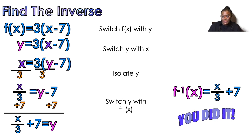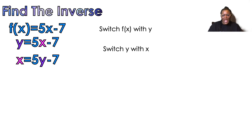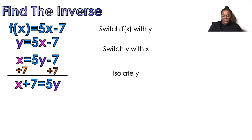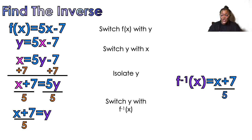Try the next one by yourself — pause the video and do it on your own. Staring at me do math does not prove that you can do math; it only proves that I can do math. Hopefully you paused. Switch f(x) with y, switch y with x, isolate y by adding 7 to both sides, then replace y with the inverse notation f⁻¹(x) for your proper answer.